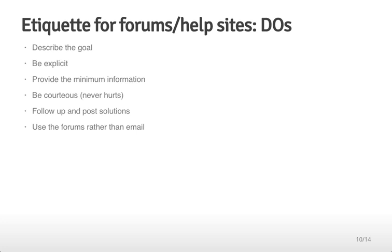On top of being specific, here's some other etiquette for forums or help sites. This applies both to our in-class forums and to forums you might post to elsewhere. Remember to describe the goal of what you're trying to do. Be very explicit, so that people don't have to ask you for more information. But try not to be too verbose. The goal is to provide all the necessary information, but no more. It never hurts to be polite, and follow up your posts with solutions that you find. If somebody responds to you by email or in a way that doesn't appear on the forums, if you post the response on the forums and the answer, the solution to your question, it will help everybody out. Remember to use the forums rather than emailing people directly.